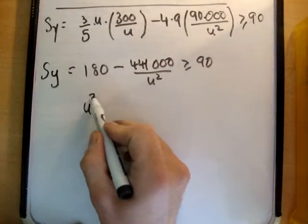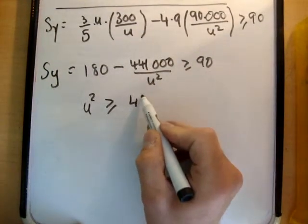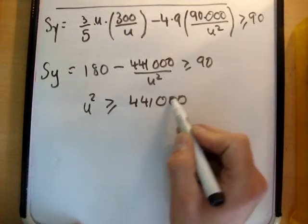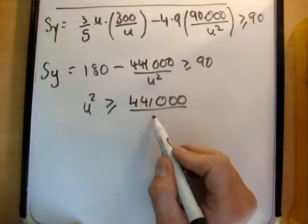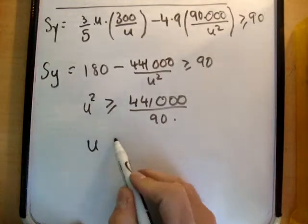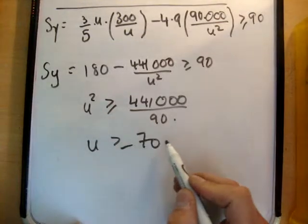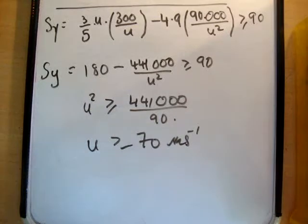And as a result, u squared is greater than or equal to 441,000 over 90. And therefore u is greater than or equal to 70 meters per second. So let's just check that at the back of the book.